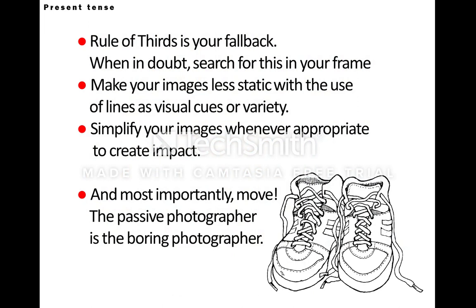In closing, we saw six approaches to making good compositions. Rule of thirds should be your default — just look for it and fall back on it. You can look for graphic elements like lines to help break up the rectangle that's trapping your world, and try to pull out the key subject by simplifying your content. But most importantly, put on your running shoes because photography is a physical pursuit. You need to move to visually explore, to see what there is to see, and to bring back images that are far from ordinary. Thanks for being here today, and I hope you got something out of this.